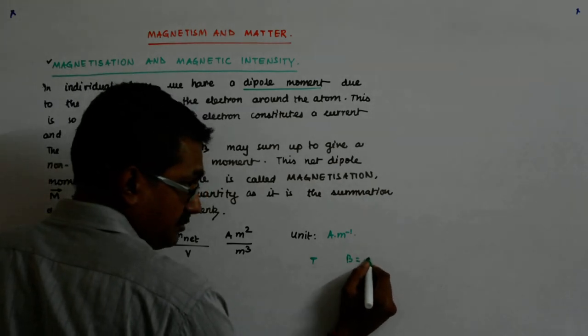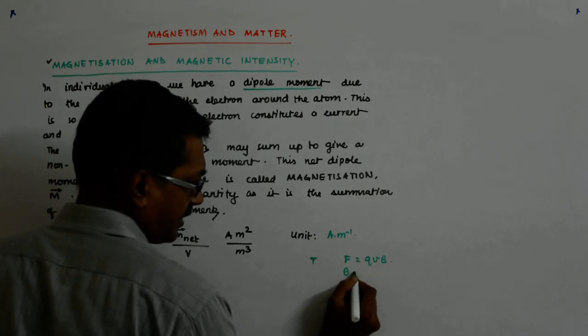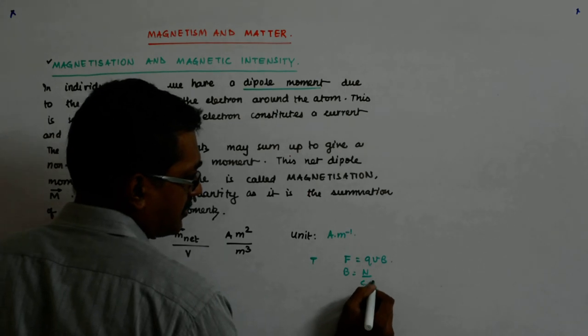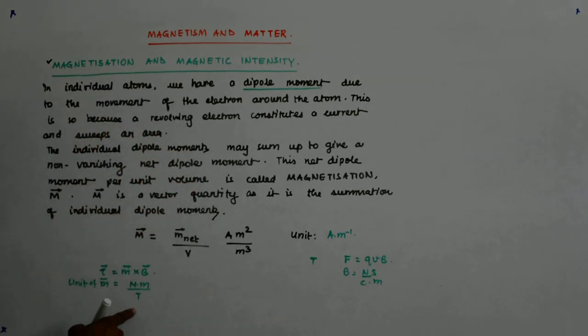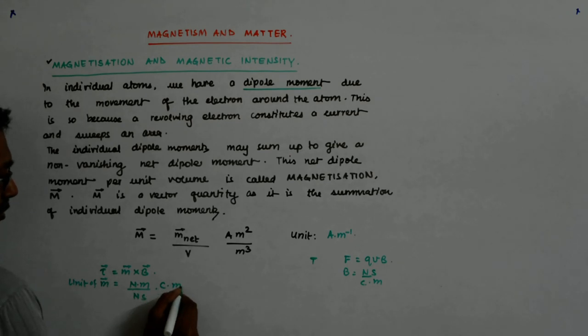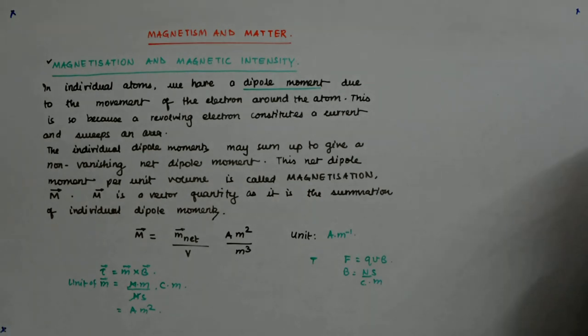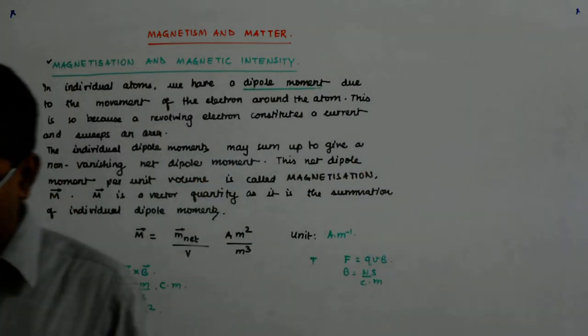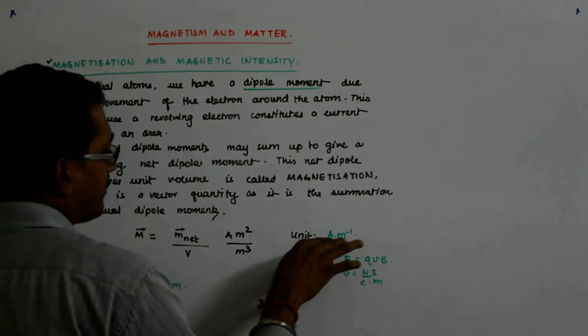F is equal to QVB. So B is Newton per coulomb per meter per second. So this goes there. So it is Newton second and that coulomb goes up and meter goes up. So this goes away. Now coulomb per second is ampere and meter square. You should once in a while try to juggle this. That kind of opens so many other doors to understand.